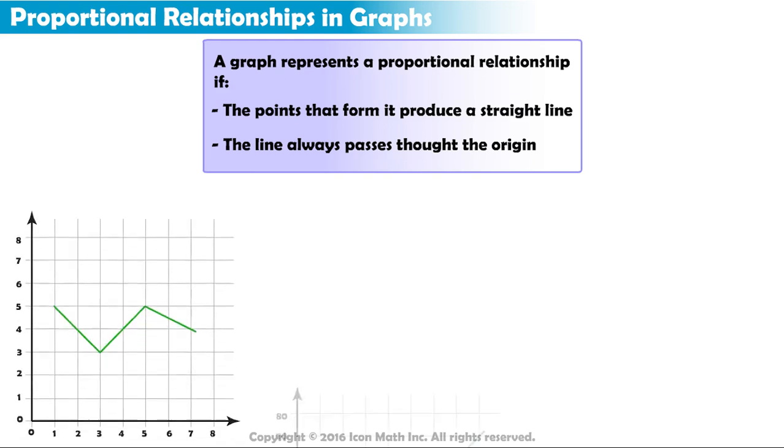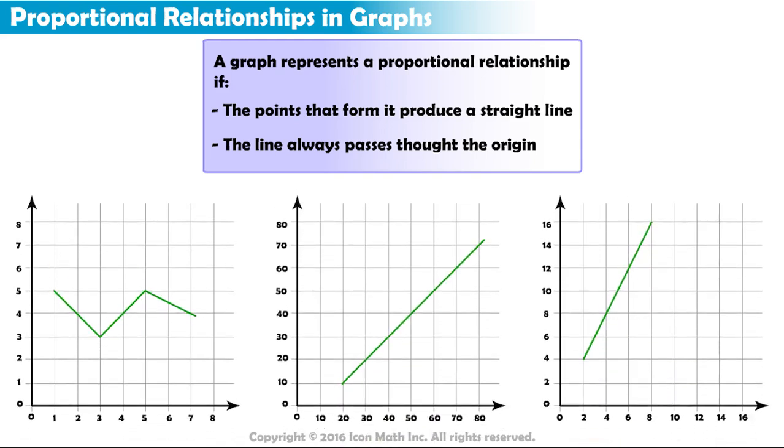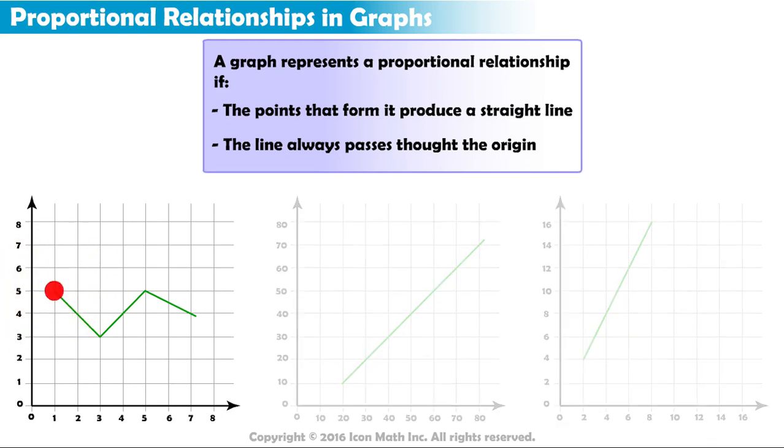Which of these three graphs represent a proportional relationship? Notice the first graph is formed by ordered pairs that do not produce a straight line. Therefore, this graph cannot represent a proportional relationship.